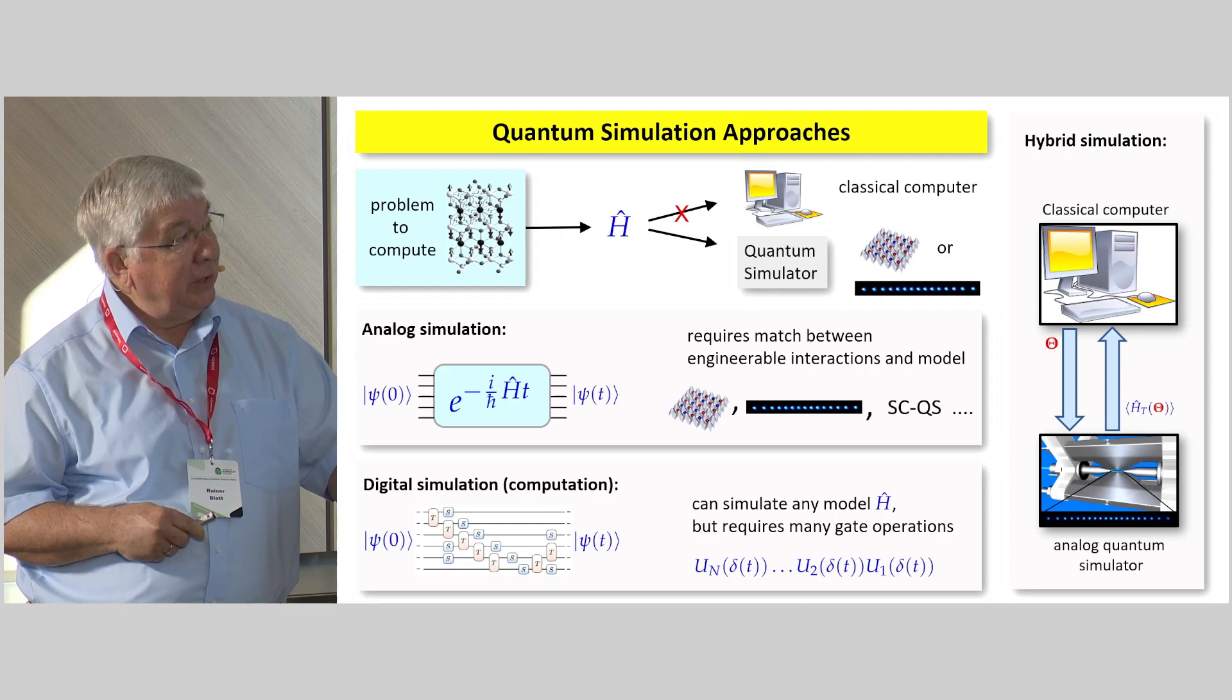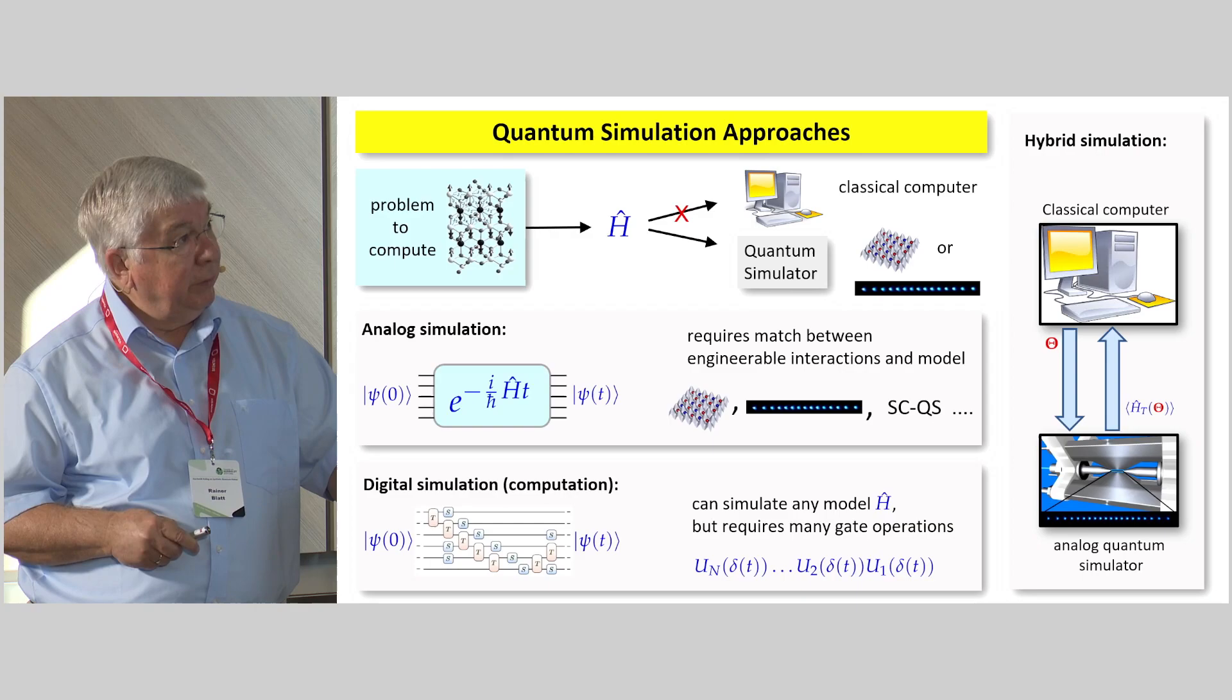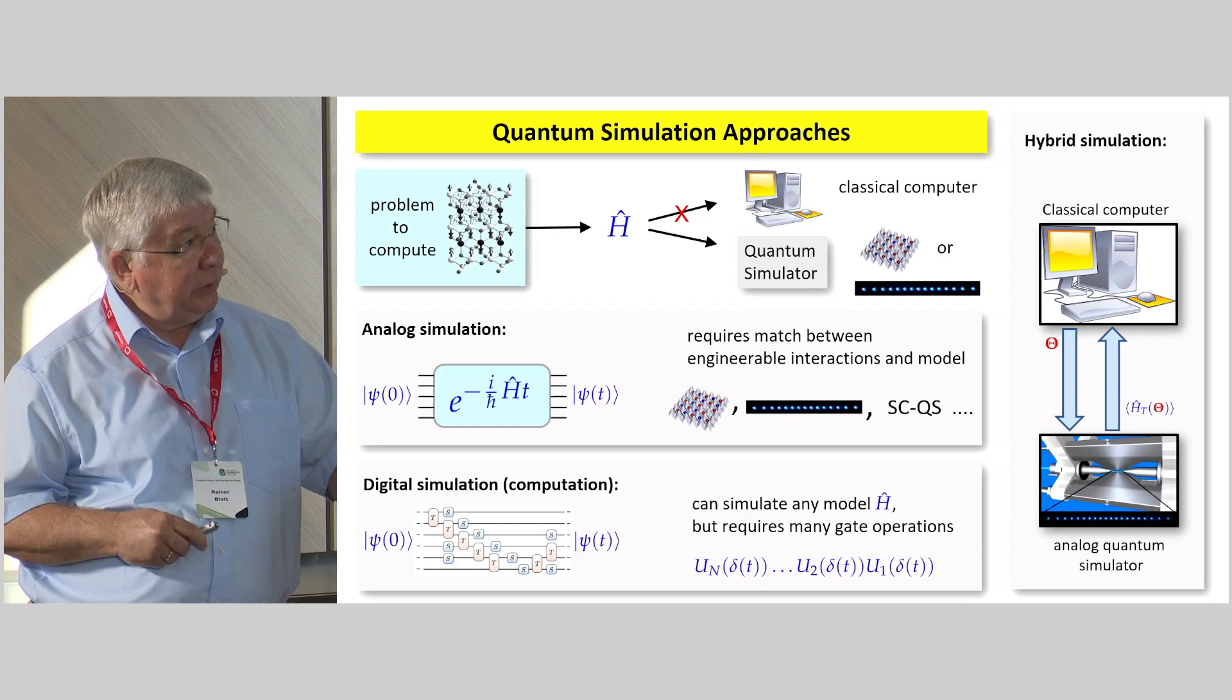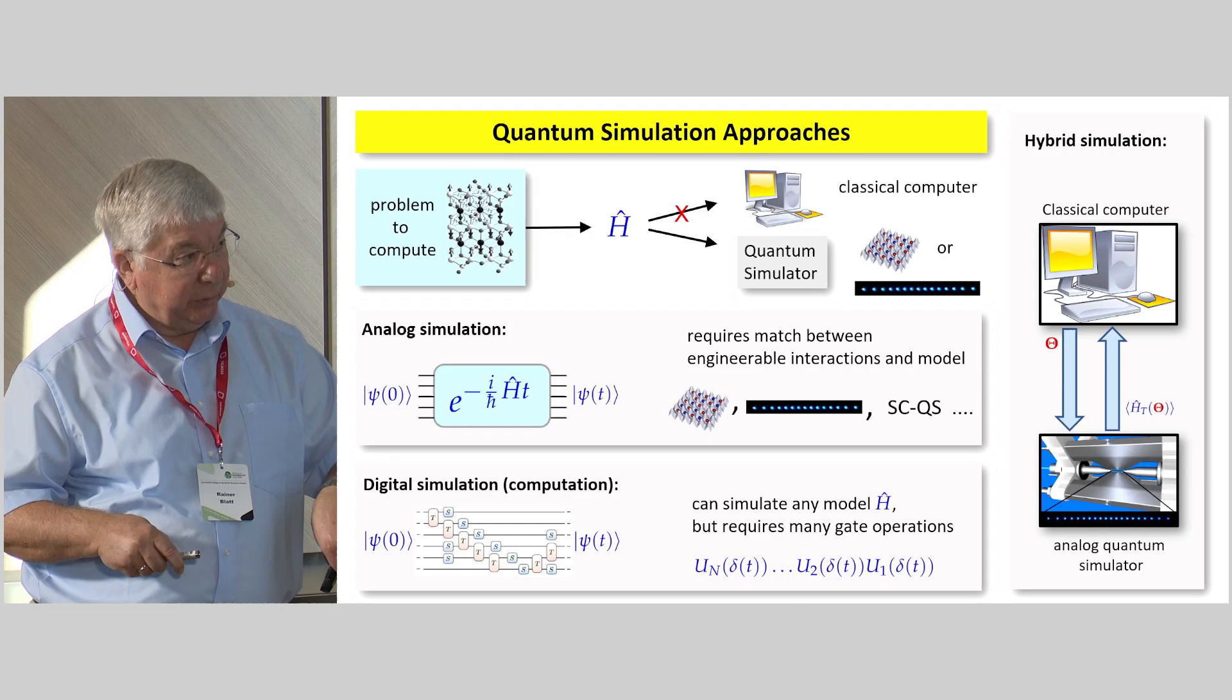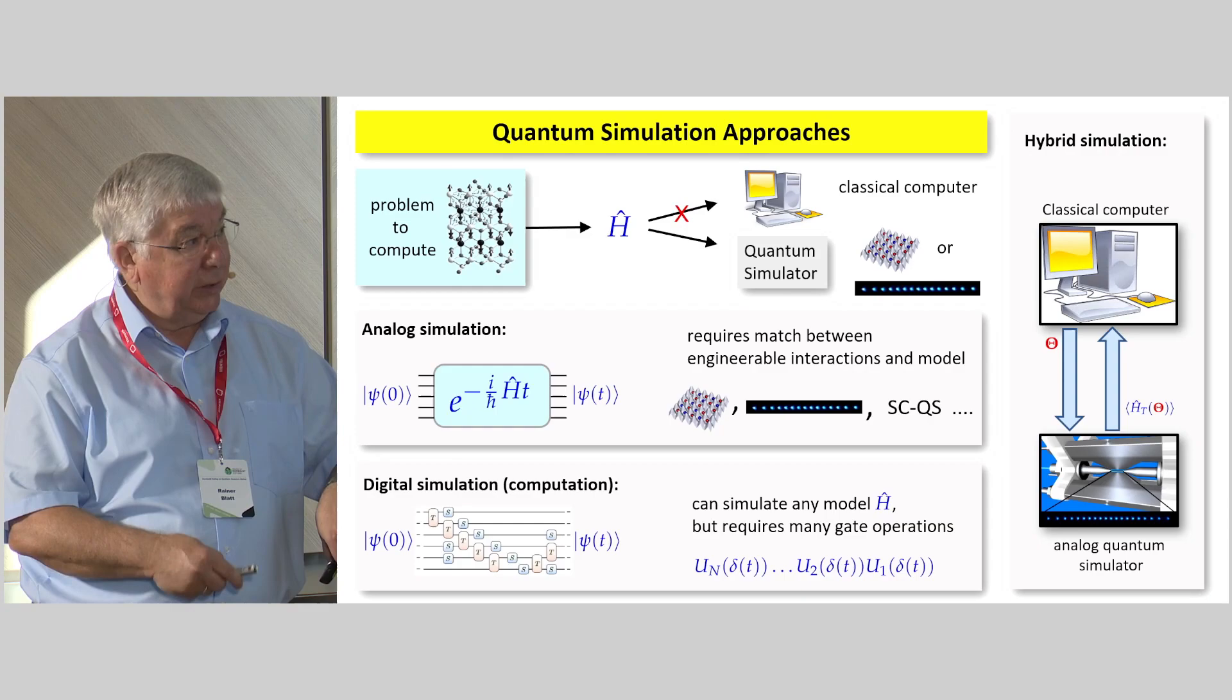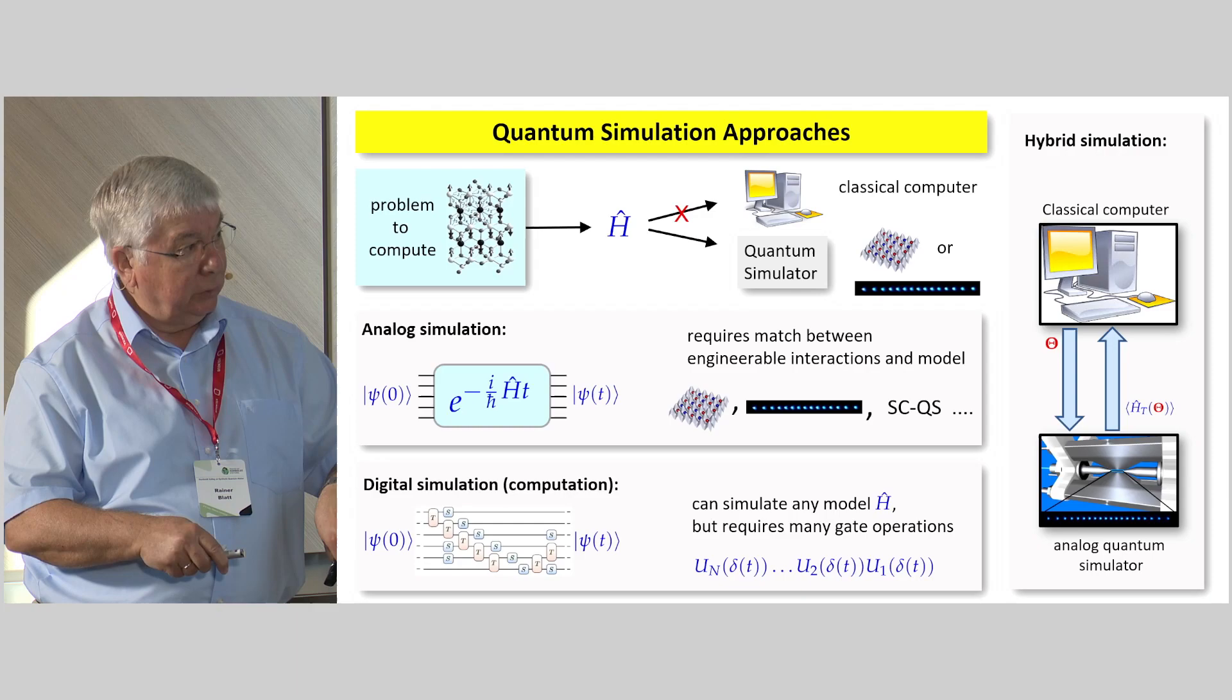One version is what we call an analog simulation, which requires a match between the engineerable interactions and the model. And then you just apply the interactions, and after a certain amount of time, you stop there and watch the evolution. There's the digital way of doing this. You replace this with a digitized version, really meaning it's just a sequence of unitary operations. As I said before, it's just a compiled version of all the gate operations that just comprise the entire algorithm that you want to run, and then you stop it.